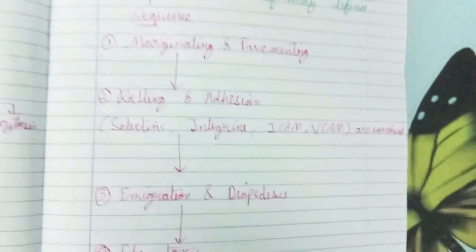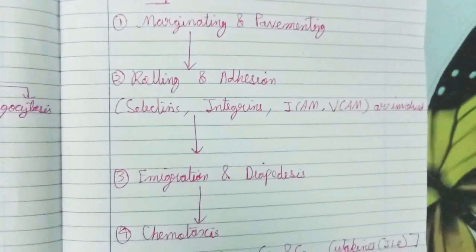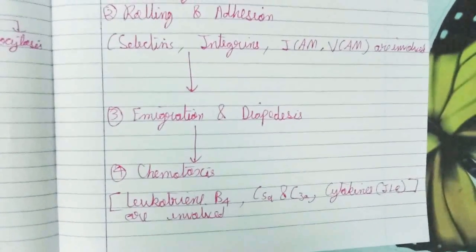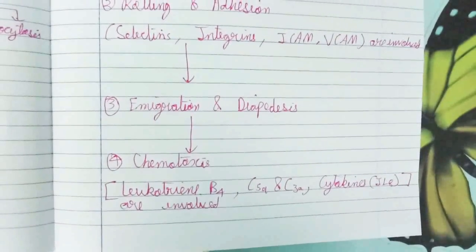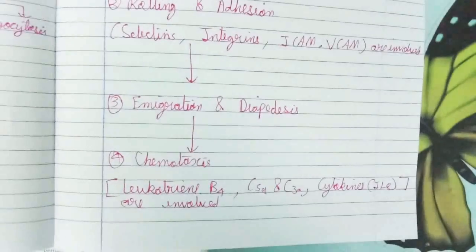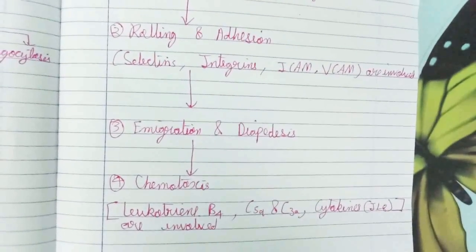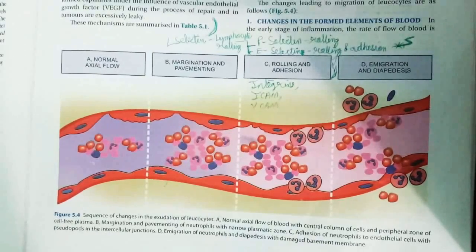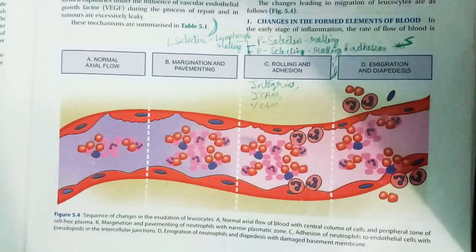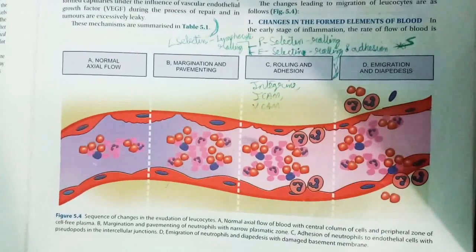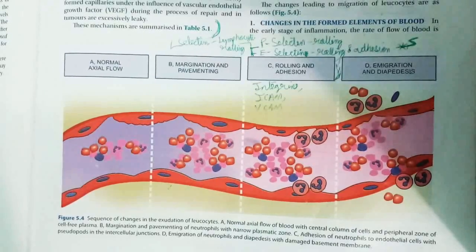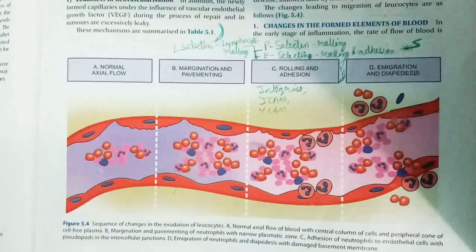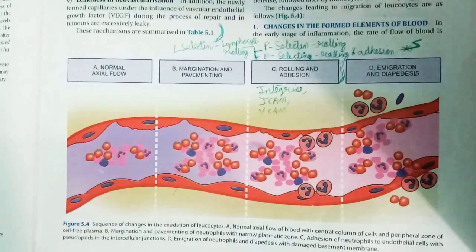The sequence of leukocyte exudation is: firstly, margination and pavementing occur; then rolling and adhesion occur, involving selectins, integrins, ICAM, and VCAM; then immigration and diapedesis occur; and finally chemotaxis occurs. Leukotrienes B4, complement proteins C3a and C5a, and cytokines such as interleukin-8 are involved. As seen in the diagram, normal axial flow occurs first, then leukocytes come and bind, causing margination and pavementing during the stasis phase.